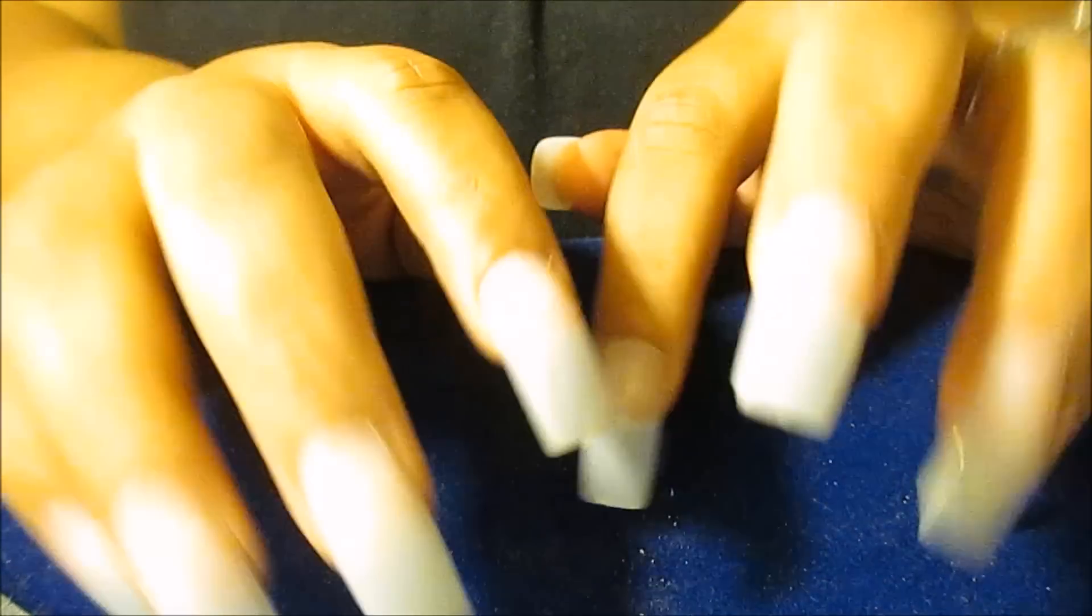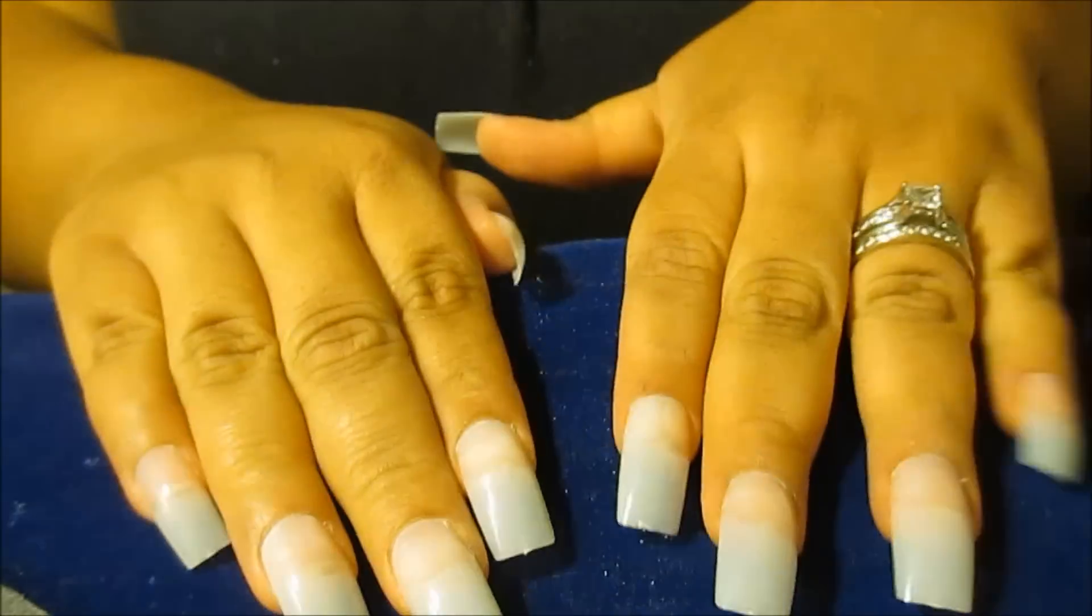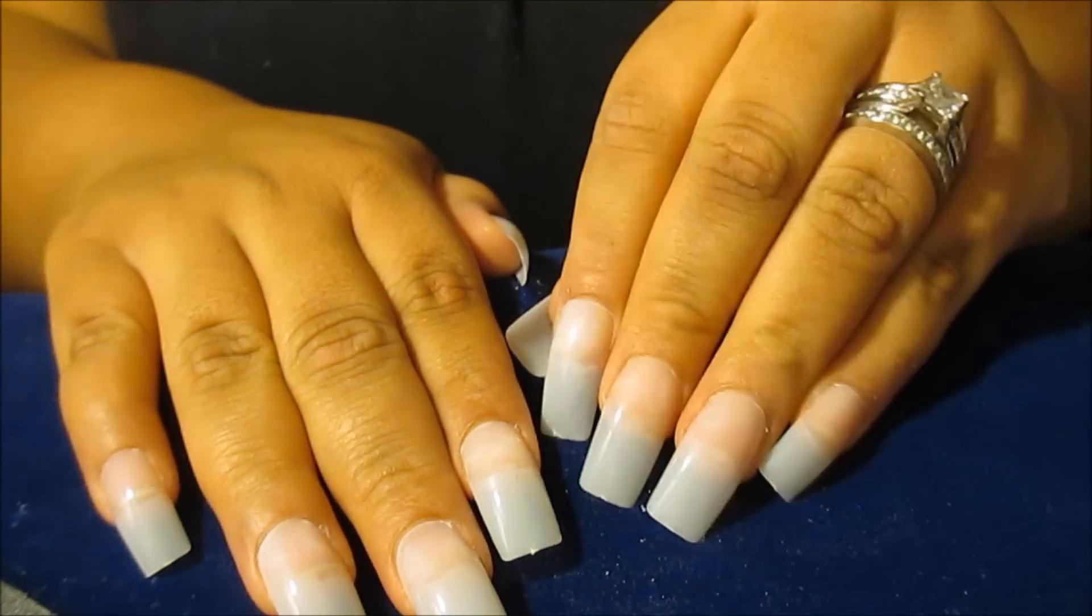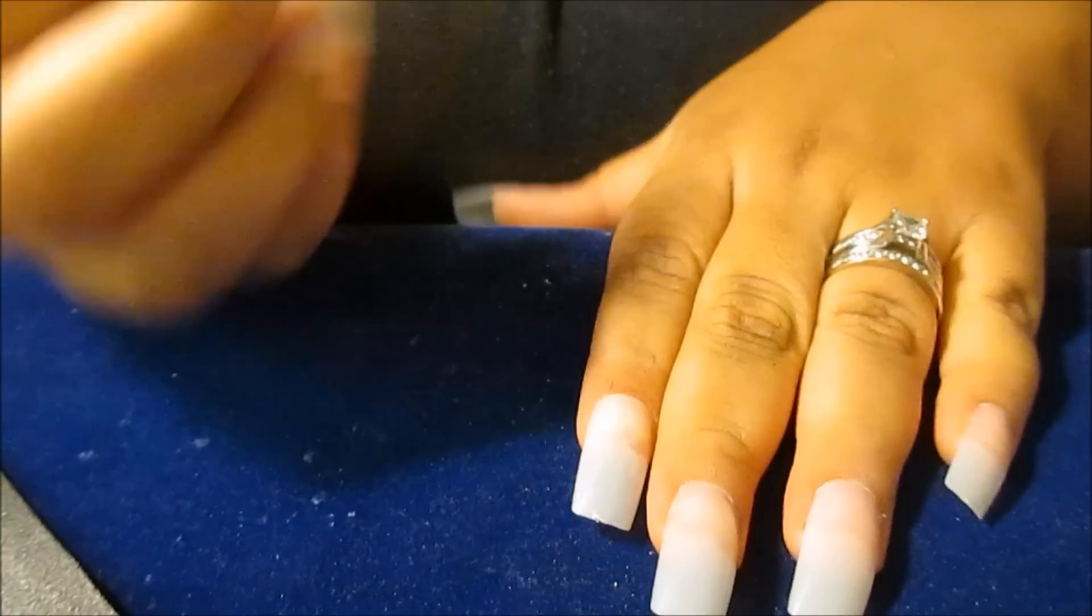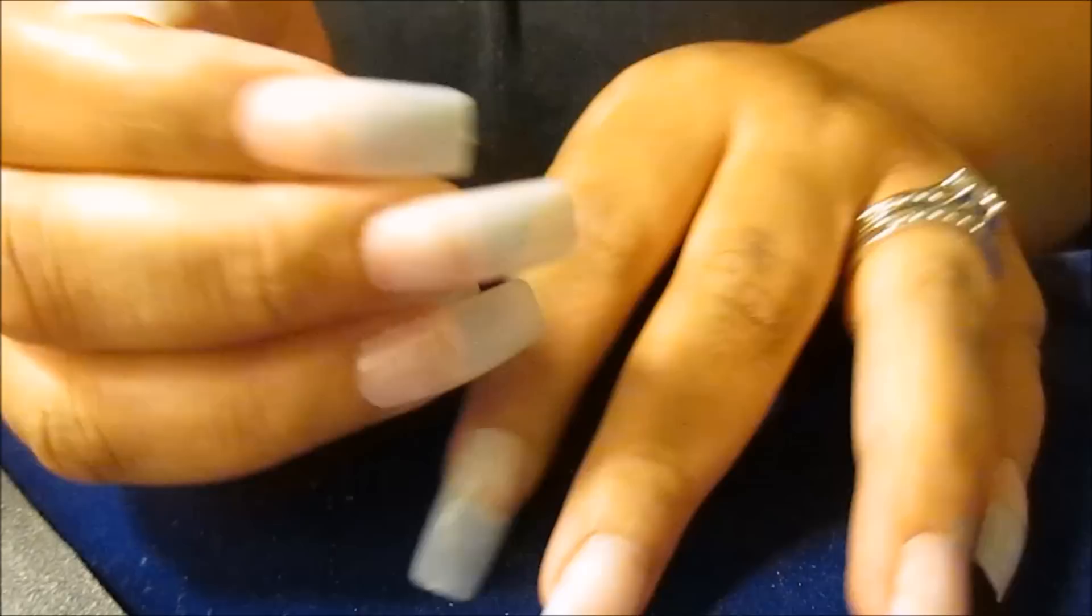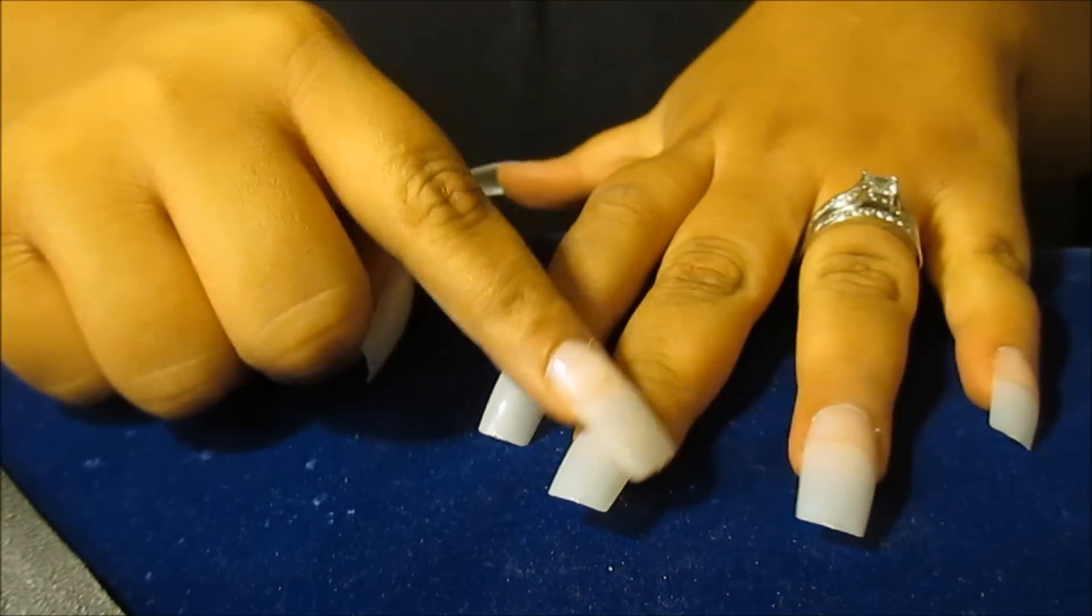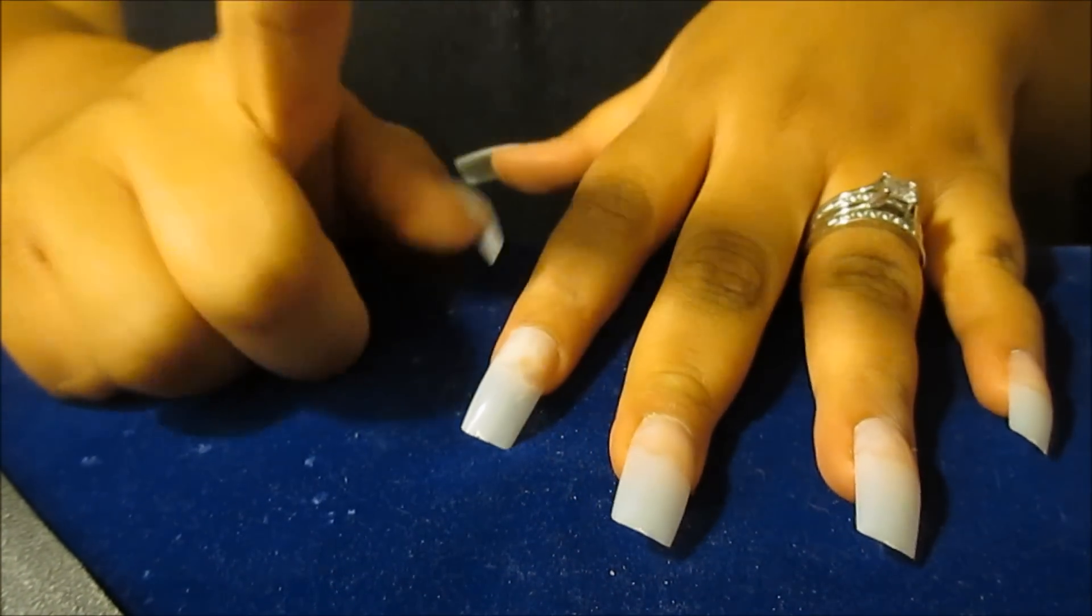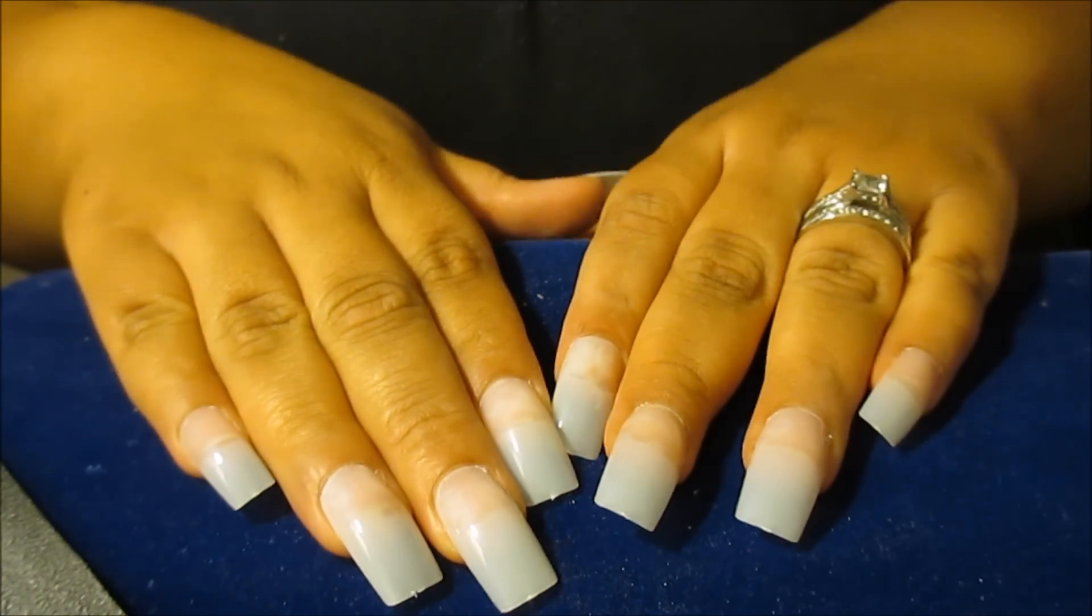So this is how they look when I first start off. So this is what they look like. And the next step you can keep them just like this if you want to. You can start painting them. Put your grease on your cuticles if that's what you want to do. But I'm going to shape my nails.